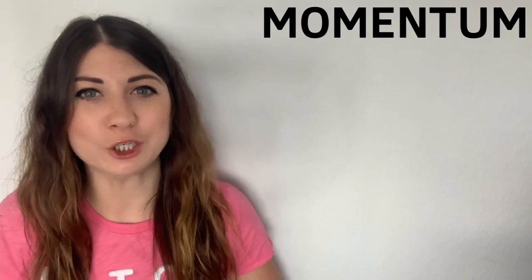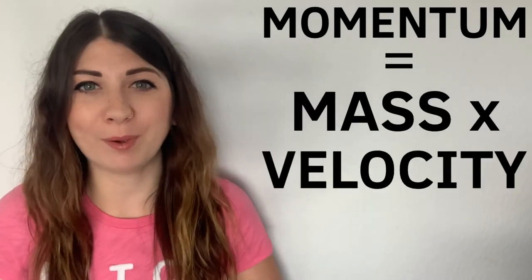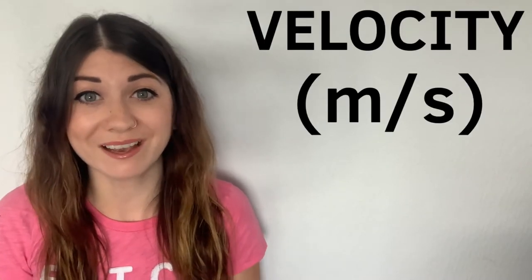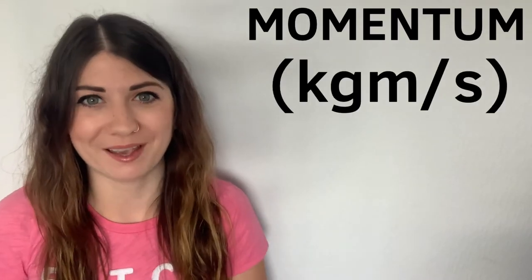You can calculate the momentum using the equation mass multiplied by the velocity. The unit for mass is kilograms and the unit for velocity is meters per second, so the unit for momentum is kilograms meters per second.